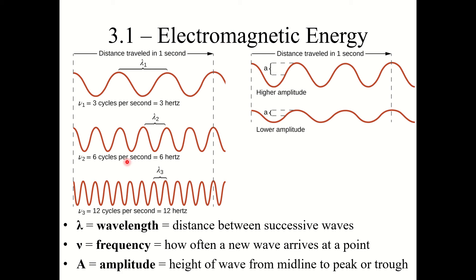There are three key terms here that you need to know. First is wavelength. Wavelength is represented by the variable lambda — the Greek letter lambda, which looks like an upside-down cursive Y. Wavelength is defined as the distance between successive waves, so typically you'll see it measured from peak to peak.